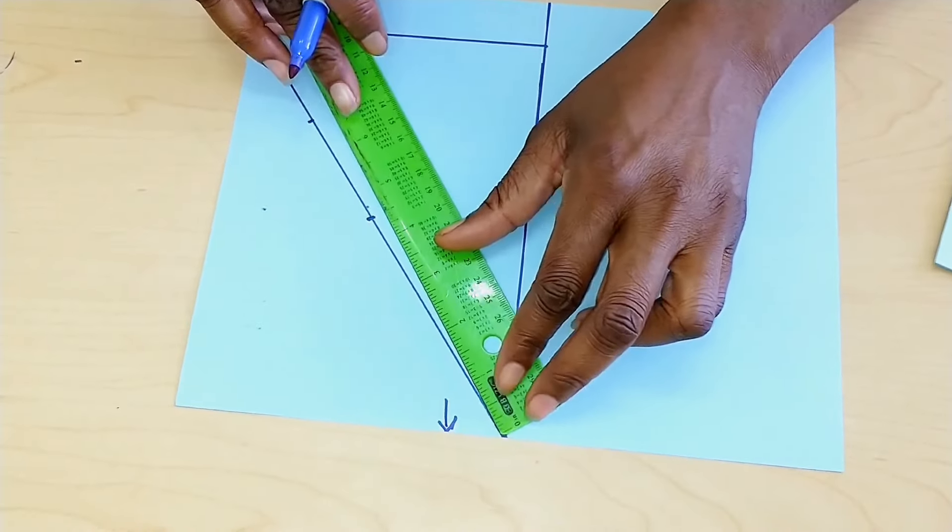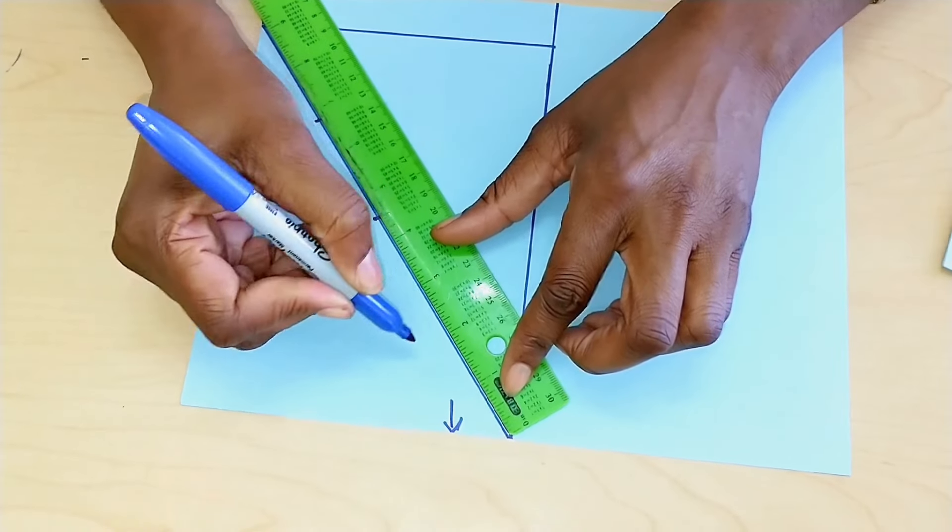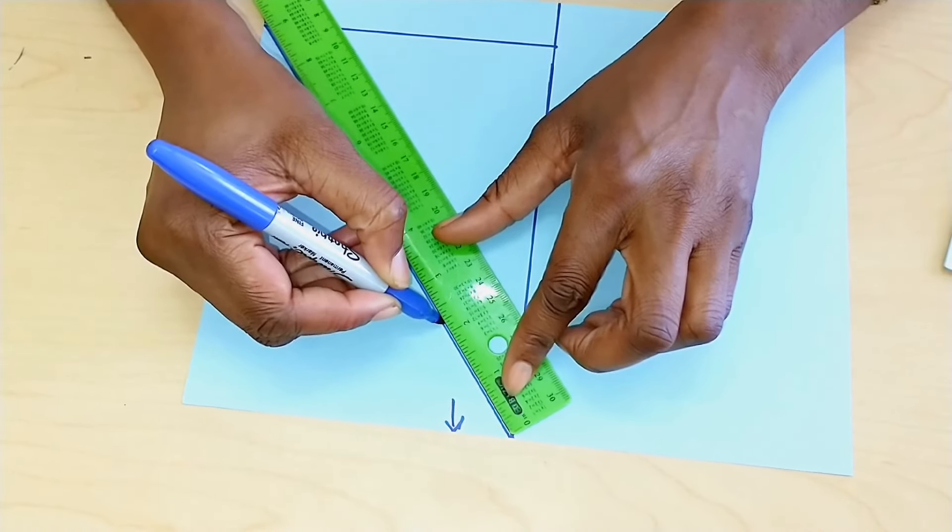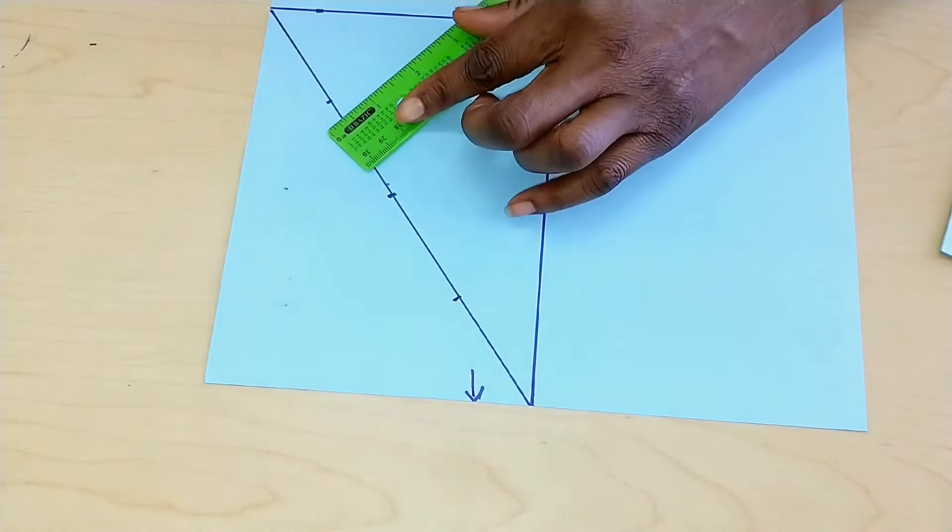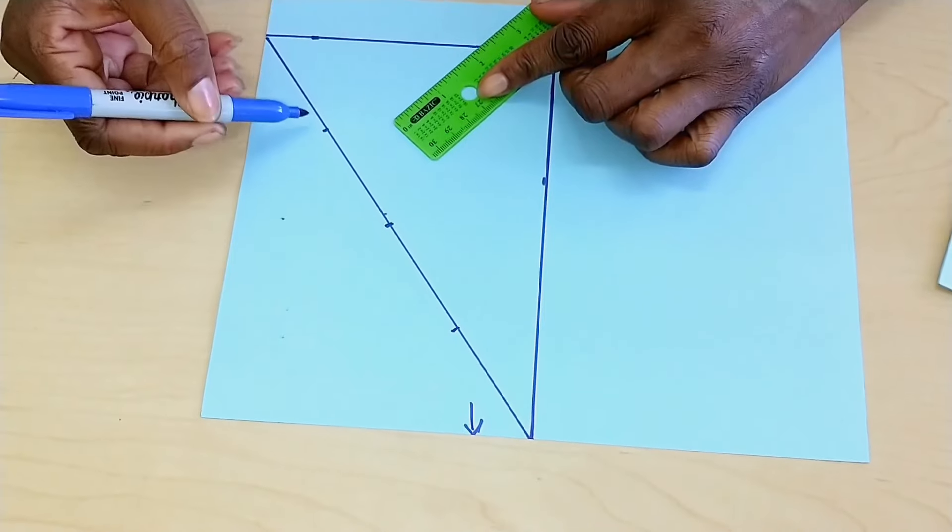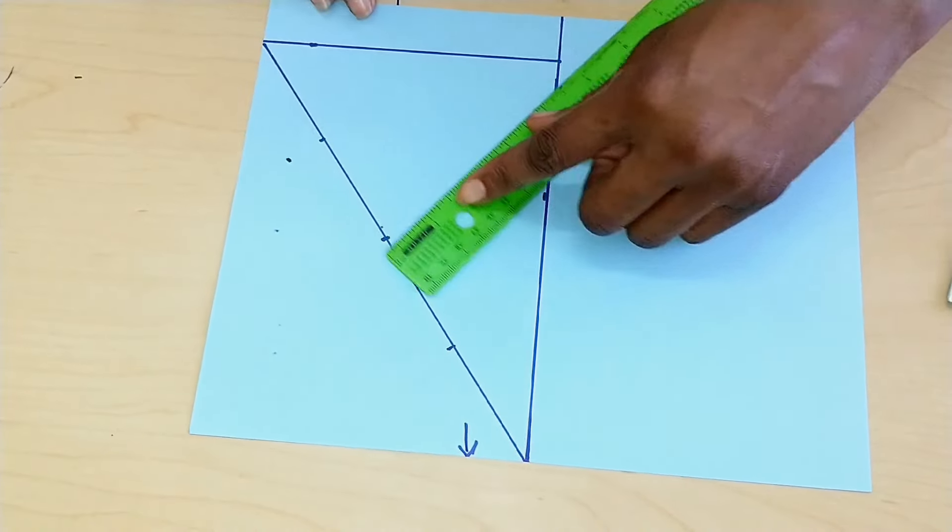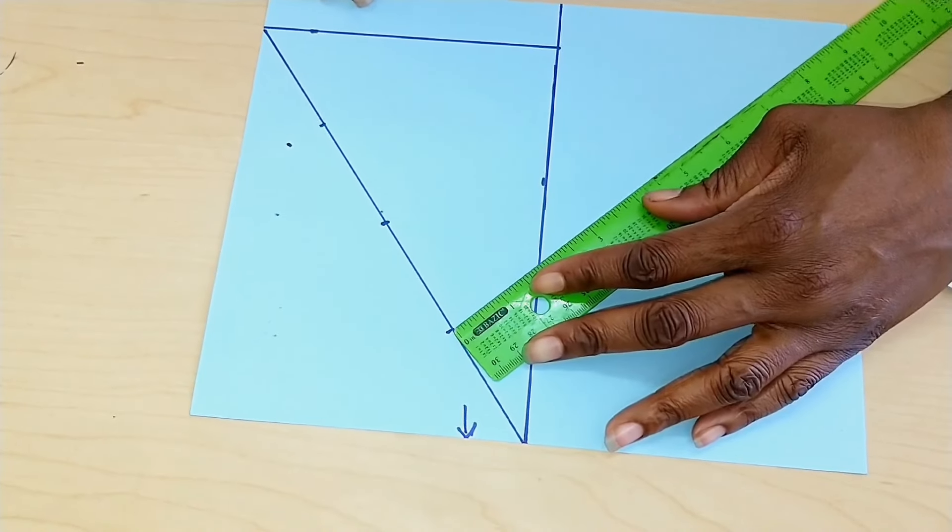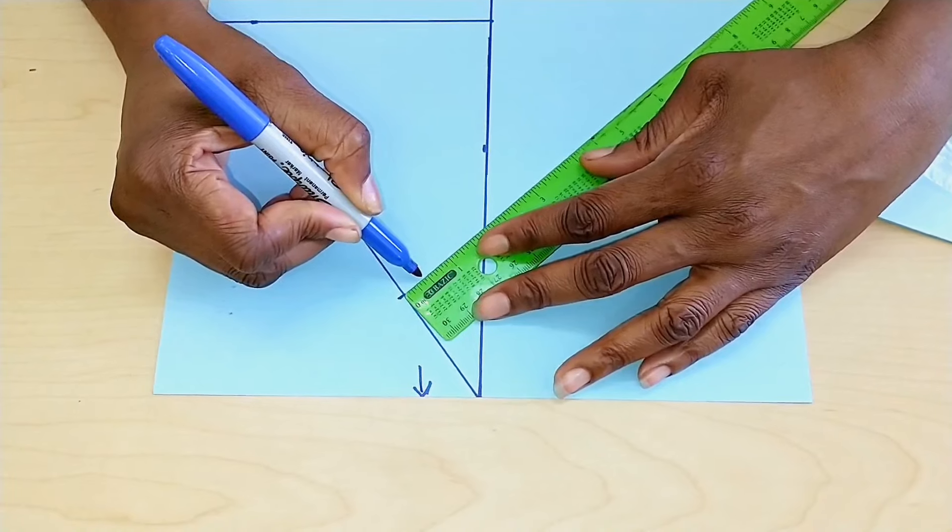Basically what we are doing is we are dividing the measurement into four quarters. On the top quarter right here, so our top half, we are going to go up three quarter of an inch, and for our bottom piece we are going to go down half inch.